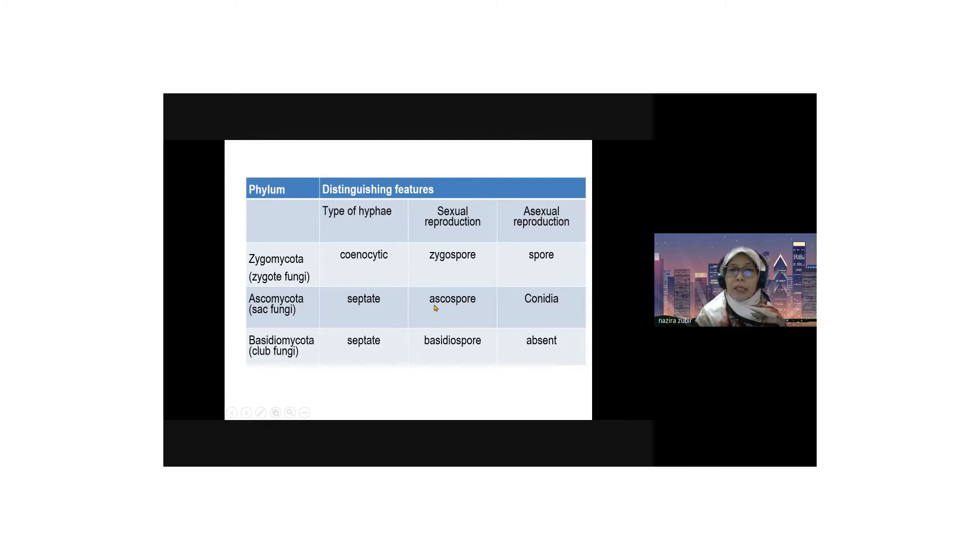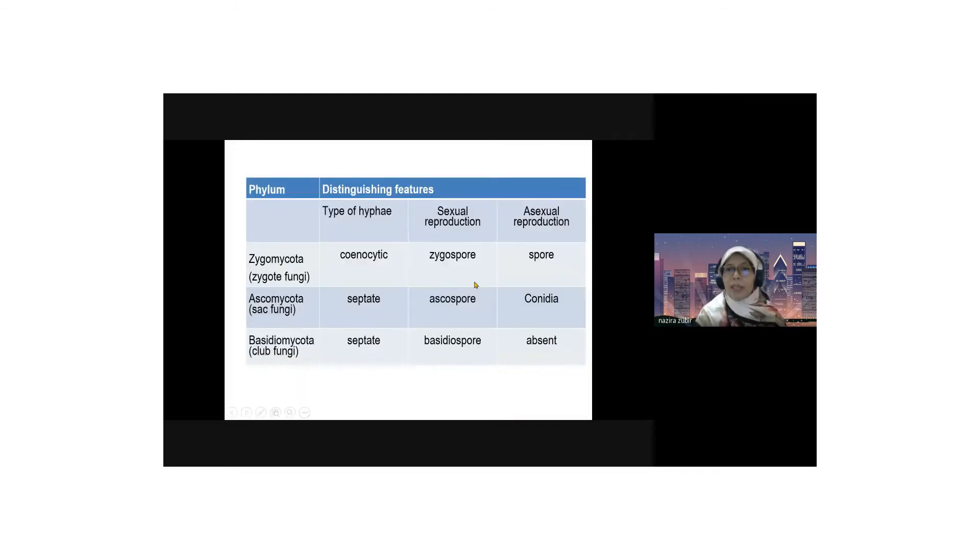So in each of the ascus it consists about eight ascospores. All these ascii are located on the fruiting body known as asco cup, okay. And for asexual reproduction, the name of the spore is cornidia, okay, cornidia.